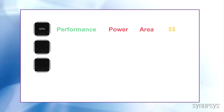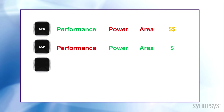There are other types of processors that can execute vision algorithms. GPUs have the math capabilities, but consume a lot of power. Traditional DSPs lack the parallelism for video processing. FPGAs are great for prototyping, but are generally slower and more expensive, so not an ideal choice for a high-volume embedded vision system.